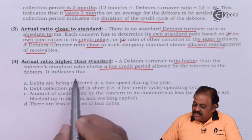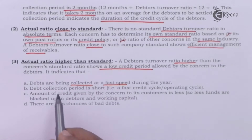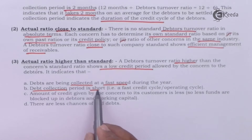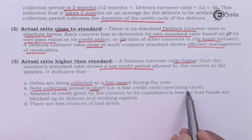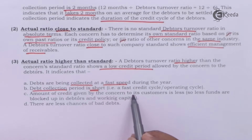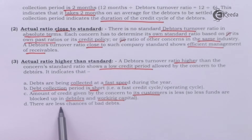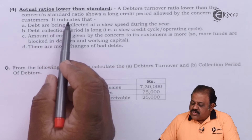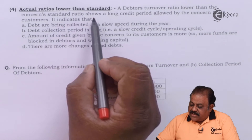When the ratio is higher than standard, it indicates that debts are being collected at a fast speed during the year — the debt collection period is short, the credit cycle and operating cycle are fast. The amount of credit given by the concern to its customers is less, so fewer funds are blocked in debtors and working capital, and there are fewer chances of bad debts.